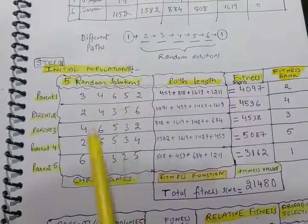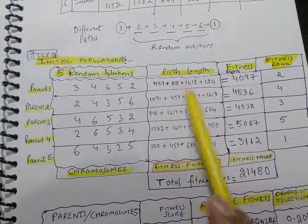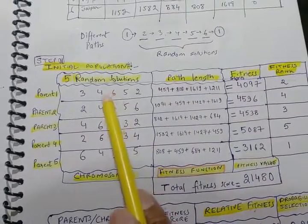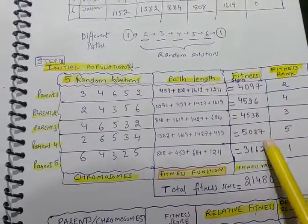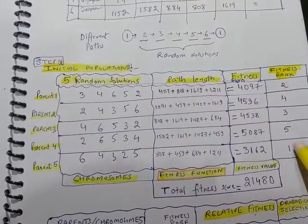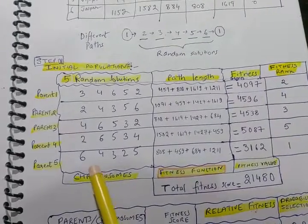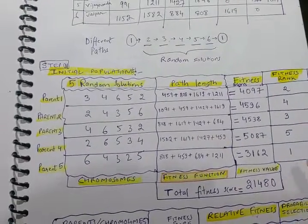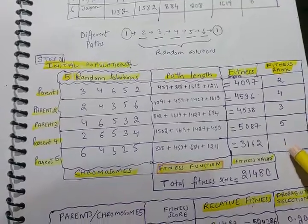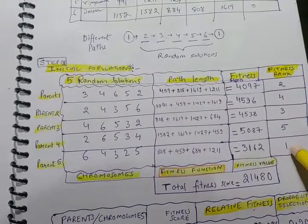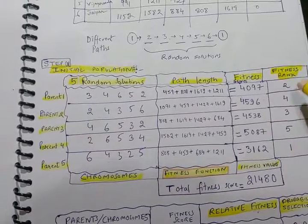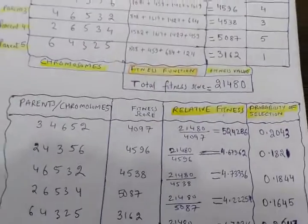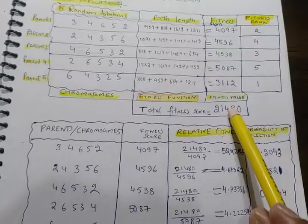We have generated random paths. After that, we got their path length using our fitness function - the sum of distances between these cities. That becomes the fitness score, and you can also give them a rank so you can clearly see which chromosome is the fittest. In this case, it is a minimization problem using genetic algorithm, so this is the most accepted case.